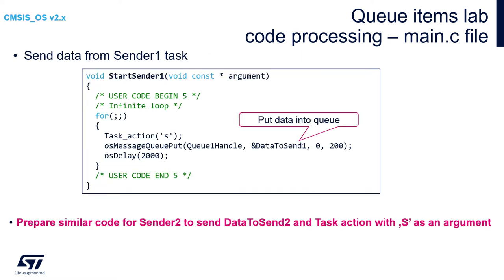Our next step is modification of the code within the sender tasks' entry functions. Starting with the startSender1 function, within its endless loop we will perform the following operations: sending small 's' over SWO using the task_action function, sending dataToSend1 into the queue with a 200 ms timeout, and waiting 2 seconds in blocked state by calling the osDelay function.